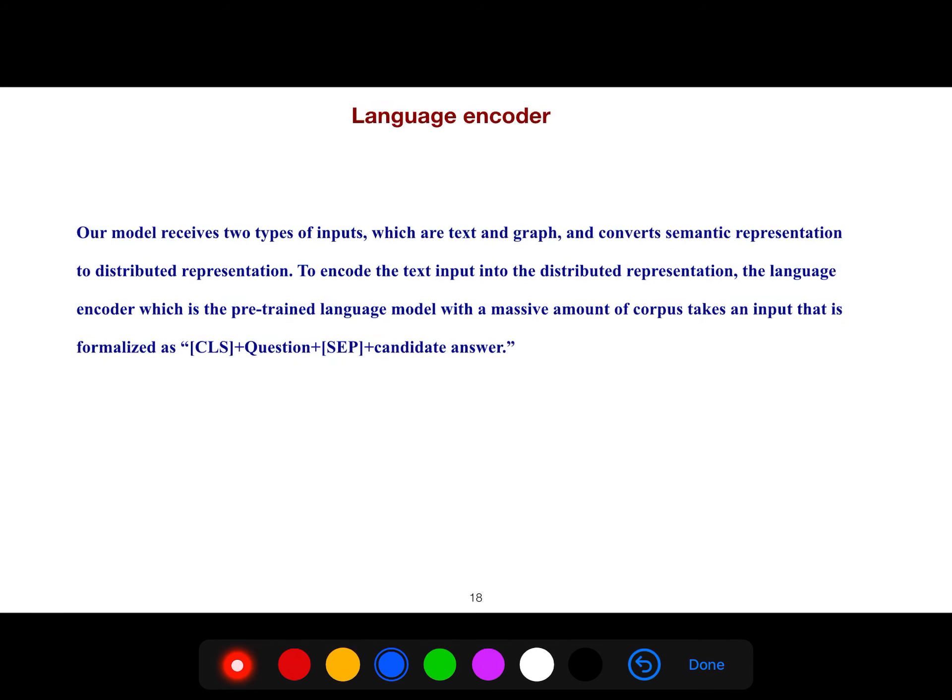We use language encoder, which is pre-trained language model with a massive amount of corpus that is formalized. Just use CLS and then question and then separator and your candidate answer. So this is what you do in reading comprehension, in everything almost everything that involves language models.